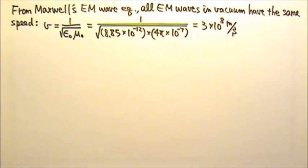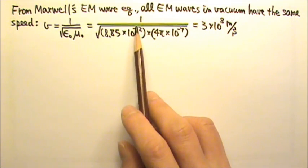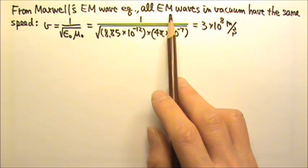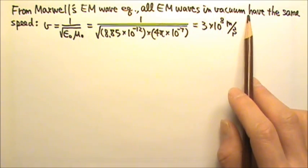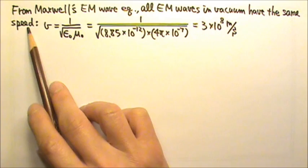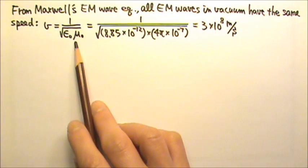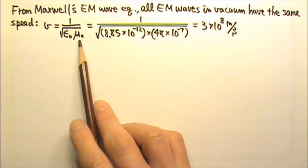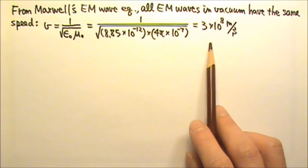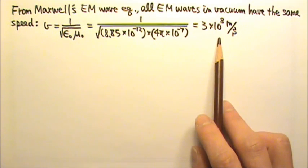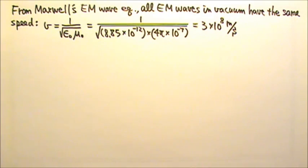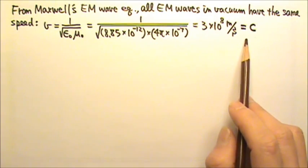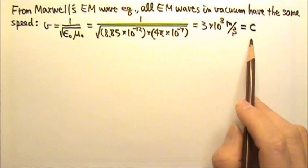Another surprising result of Maxwell's work on EM wave is that his EM wave equation showed that all EM waves traveling through empty space at the same speed: V equals 1 over square root of epsilon naught times mu naught, which is the speed of all EM waves in vacuum, 3 times 10 to the 8 meters per second. It's a special speed, and we use lowercase c for this speed.